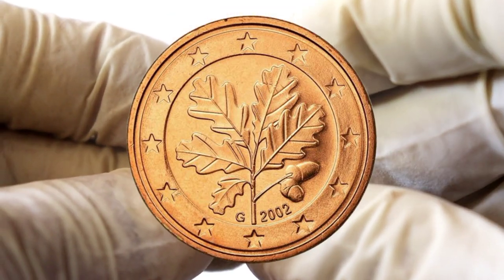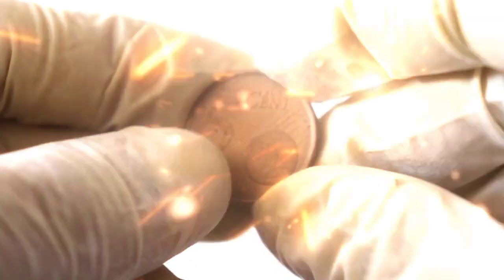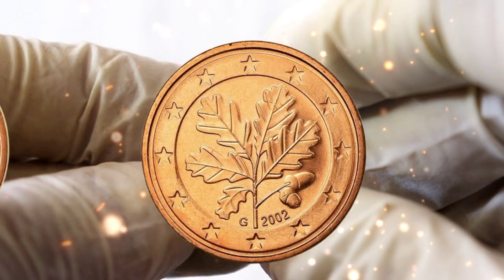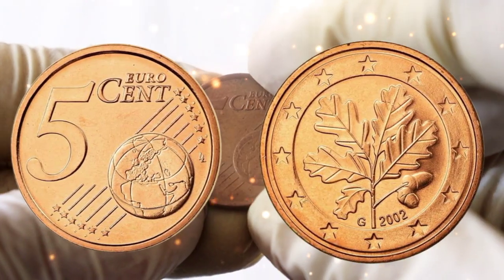Let's start by introducing the star of our show, the 5 Eurocent coin from 2002. This coin, like others in the Eurocent series, features a common design on the obverse side, depicting Europe and its 12 stars.